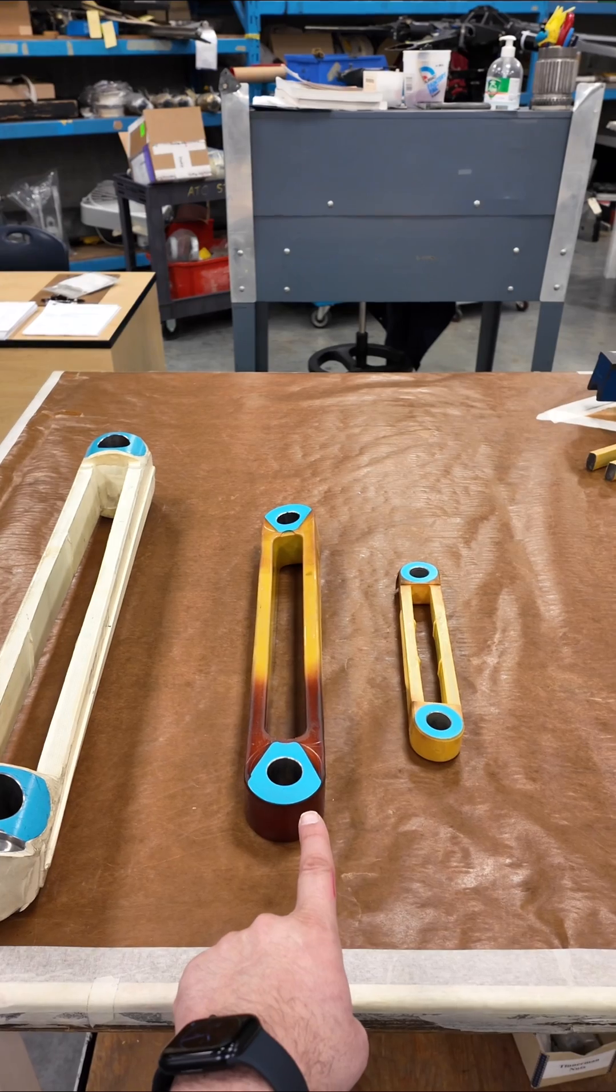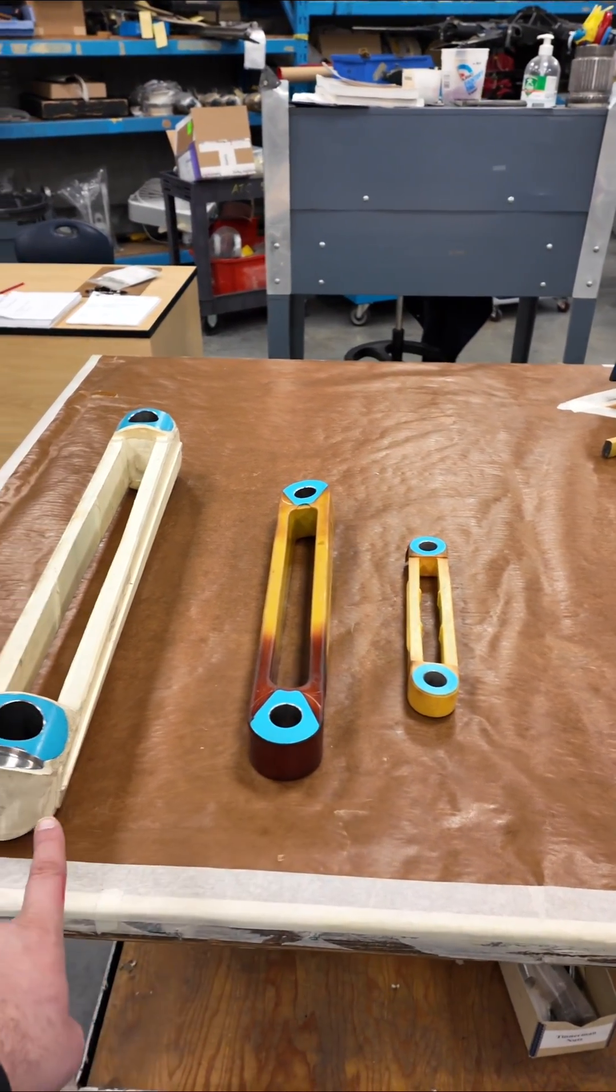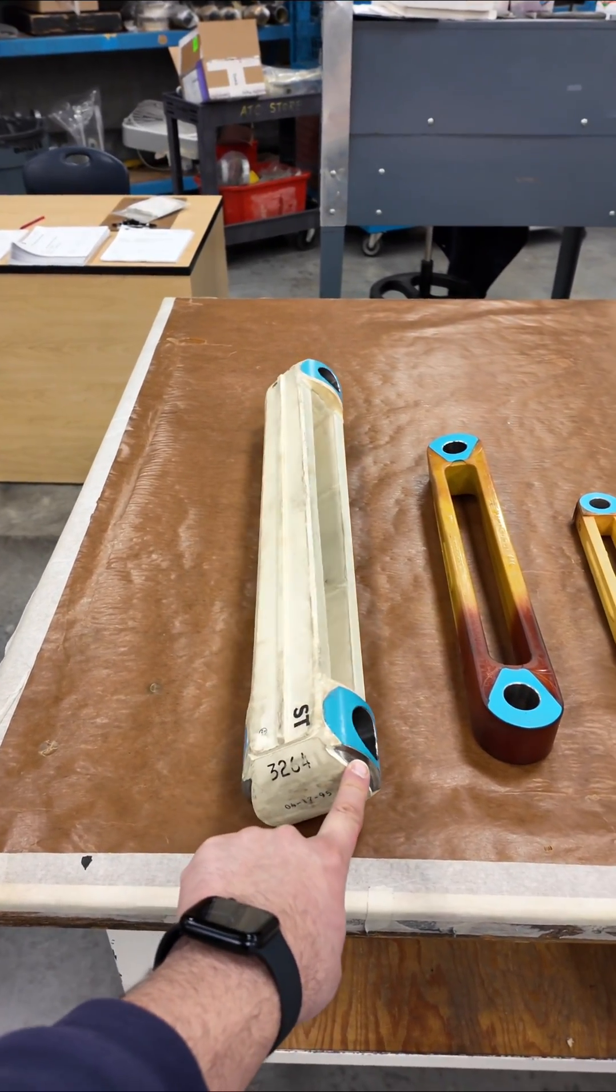The first one is from a Bell 206. The second one is the tension torsion strap used in a Bell medium, like a Bell 205. And the third one here is the tension torsion strap from the Bell 214.